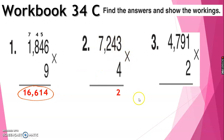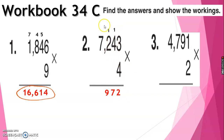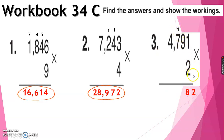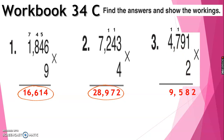Number 2: 3 times 4 is 12 — write 2 and carry 1. 4 times 4 plus 1 is 17. 4 times 2 is 8, plus 1 is 9. 4 times 7 is 28. Therefore the answer is 28,972. Number 3: 2 times 1 is 2. 2 times 9 is 18 — write 8 and carry 1. 2 times 7 is 14, plus 1 is 15 — write 5 and carry 1. 2 times 4 is 8, plus 1 is 9. Therefore, number 3 is 9,582.